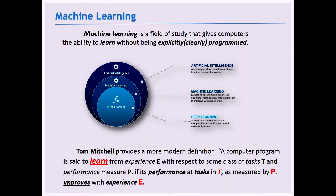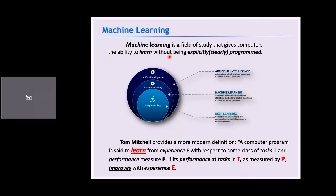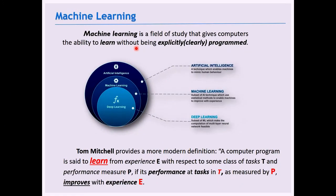Before introducing machine learning, I will introduce artificial intelligence. Artificial intelligence is a wide-ranging branch of computer science mainly concerned with building smart systems capable of mimicking human intelligence. One of the most common preferred methods to achieve this is called machine learning. Deep learning is actually a part of machine learning.